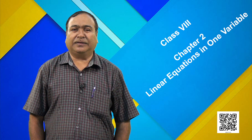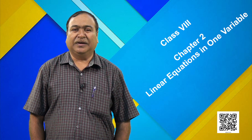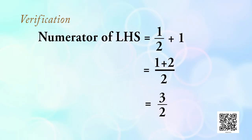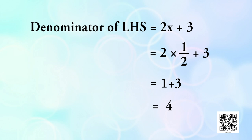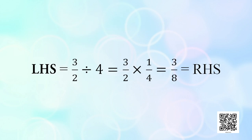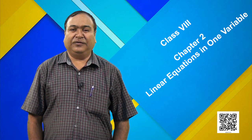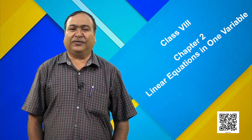We can verify by putting x = 1/2 in the equation. The numerator of LHS is 1/2 + 1 = 3/2 and the denominator is 2(1/2) + 3 = 1 + 3 = 4. So LHS = (3/2)/4 = 3/2 × 1/4 = 3/8, which equals the RHS. Therefore x = 1/2 satisfies the given equation.